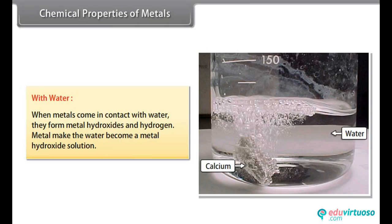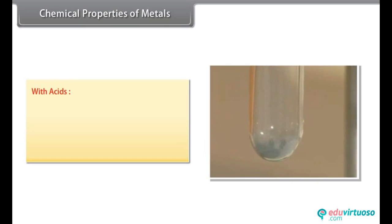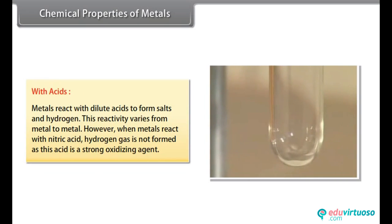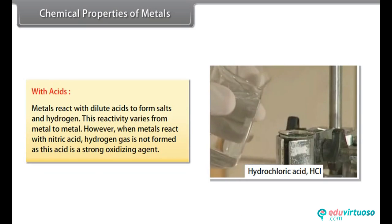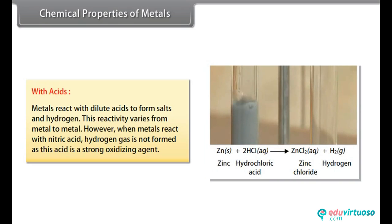With water: When metals come in contact with water, they form metal hydroxides and hydrogen. Metal makes the water become a metal hydroxide solution. With acids: Metals react with dilute acids to form salts and hydrogen. This reactivity varies from metal to metal. However, when metals react with nitric acid, hydrogen gas is not formed as this acid is a strong oxidizing agent.